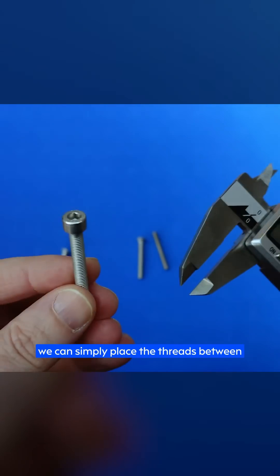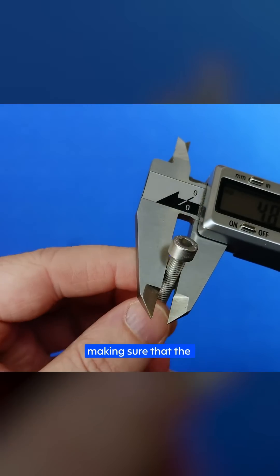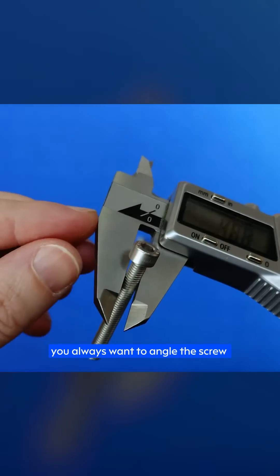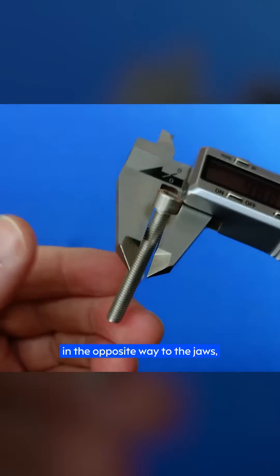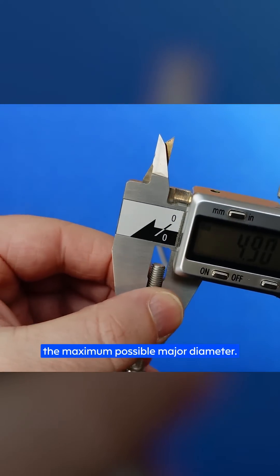And to measure this, we can simply place the threads between the jaws of our calipers like this, making sure that the threads sit flat on the jaws. One key tip here is that you always want to angle the screw in the opposite way of the jaws, just to make sure that you always get the maximum possible measured diameter.